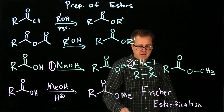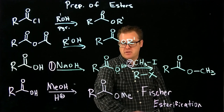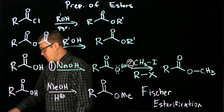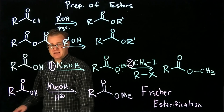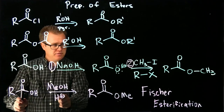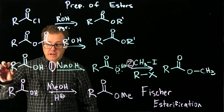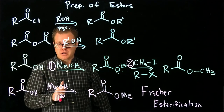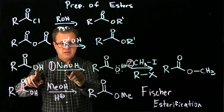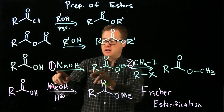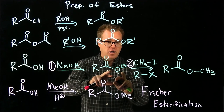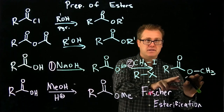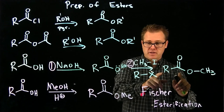Let's look at the mechanism for these ester-forming reactions. The basic route — deprotonation of the carboxylic acid to give the carboxylate, then SN2 with the alkyl halide to give the ester — make sure you know that mechanism. The Fischer esterification mechanism we'll go through together.